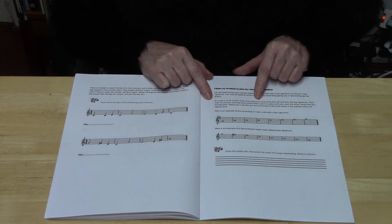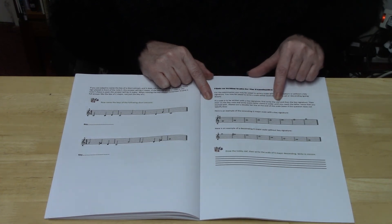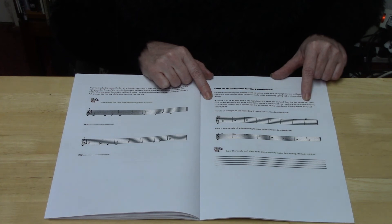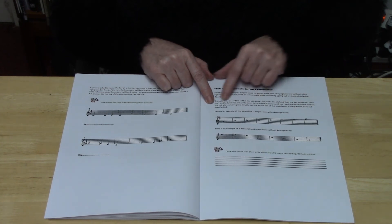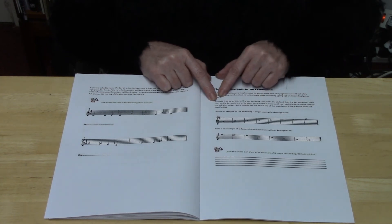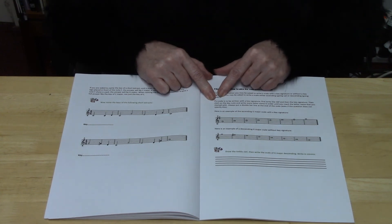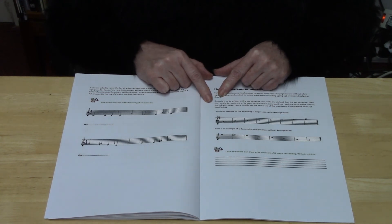If a scale is to be written with a key signature, first you must write the clef and then the key signature, then start on the key note. So obviously if you're writing with a key signature of G you're going to put an F sharp in the key signature and you'll start on the key note which is the G.